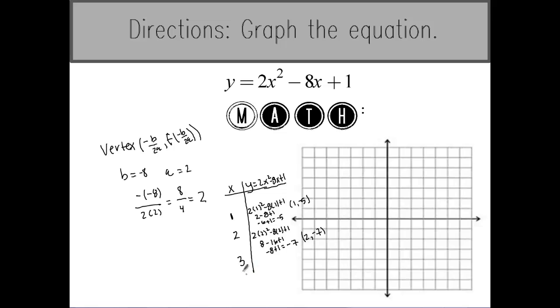The last point I'm going to check is 3 so I'm going to plug 3 in. 2 times 3 squared minus 8 times 3 plus 1. 3 squared is 9, 9 times 2 is 18 minus 24 plus 1. 18 minus 24 is negative 6 plus 1 which is negative 5. So my last coordinate is 3, negative 5.